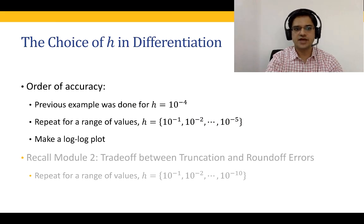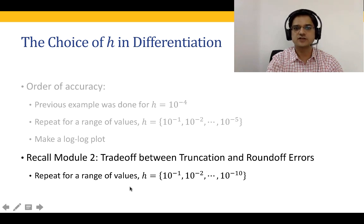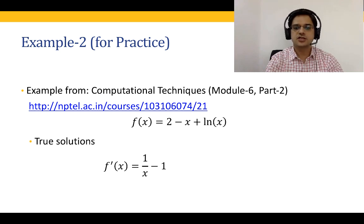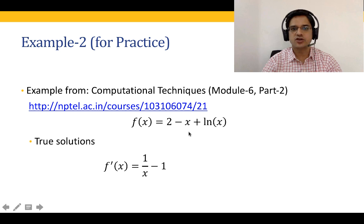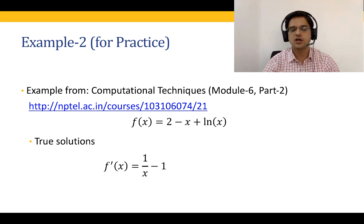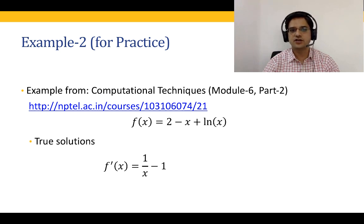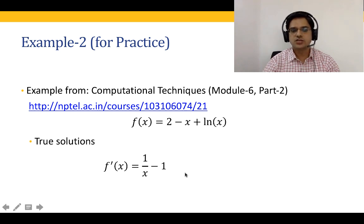This illustrates the trade-off between truncation error and round-off error discussed in module 2 — we see similar trade-offs in the forward and central difference formulae. The theoretical background for why minima occur at these values is covered in the Computational Techniques course, module 6 part 2, with a link provided. In that lecture, the example uses f(x) = 2 - x + ln(x) with true derivative 1/x - 1, which is a good practice problem.